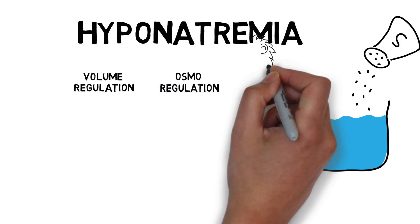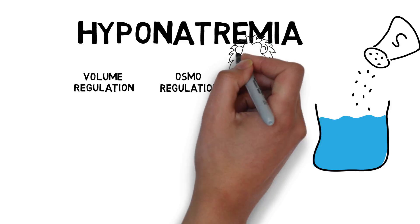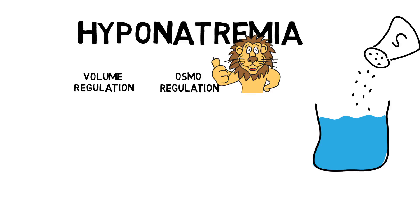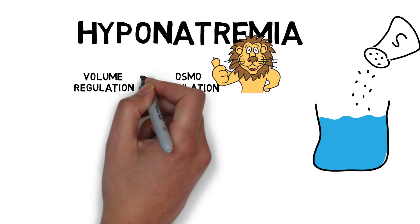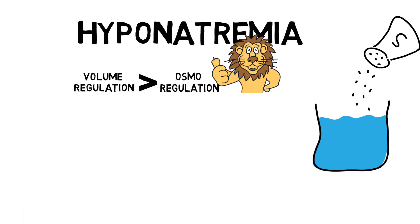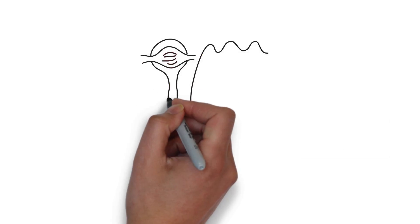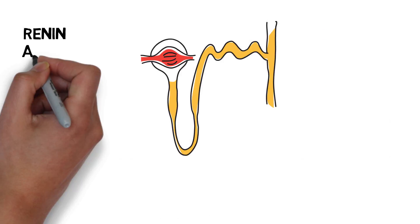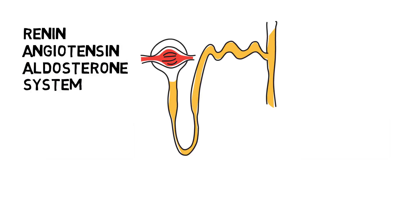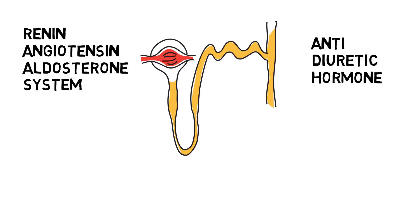Obviously, when your leg gets bitten off by a lion, it's more important to keep an adequate blood pressure — volume regulation — than it is to maintain electrolyte homeostasis — osmoregulation. Of course, one cannot go without the other. Sodium is the most abundant ion in our body, responsible for tonicity. By retaining sodium through the renin-angiotensin-aldosterone system, the body also retains water. Another hormone responsible for volume regulation is ADH, or antidiuretic hormone, also known as vasopressin.